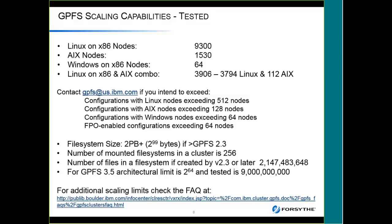In terms of file system sizes, as long as you're at higher than GPFS 2.3 — and at this point you should be on 3.5 — you can have a file system up to about 2 petabytes. You can have 256 file systems, around 2 billion files in the file system. The architectural limit is 2 to the power of 64. There's a whole lot of other scaling limits, and I've put the link in here for the GPFS cluster FAQ — if you're going to put GPFS in production, you should be very familiar with what's in that FAQ.